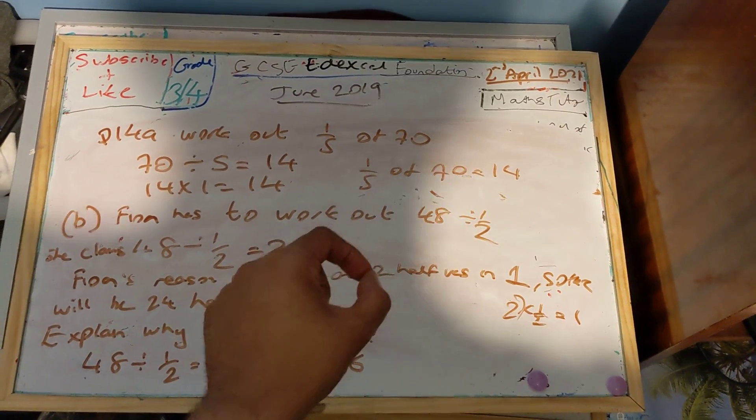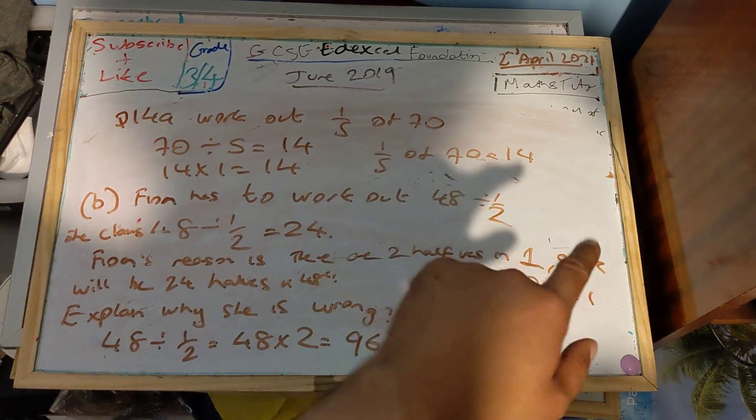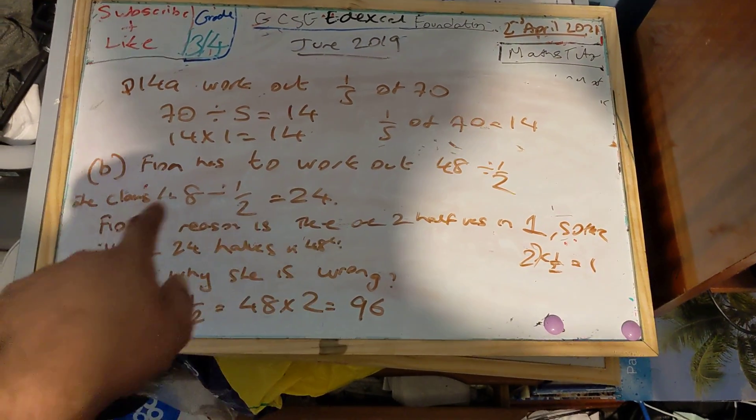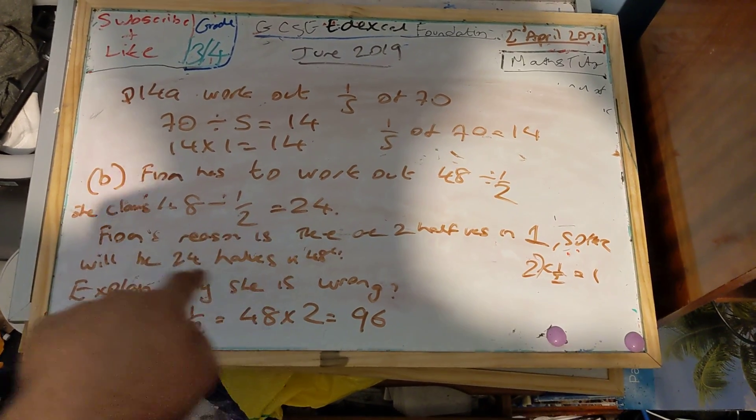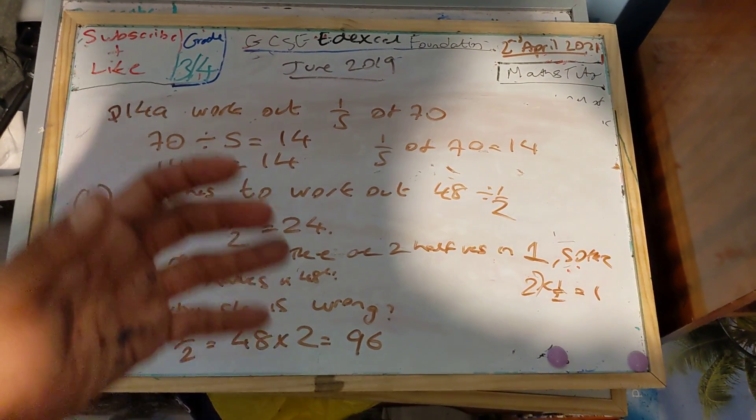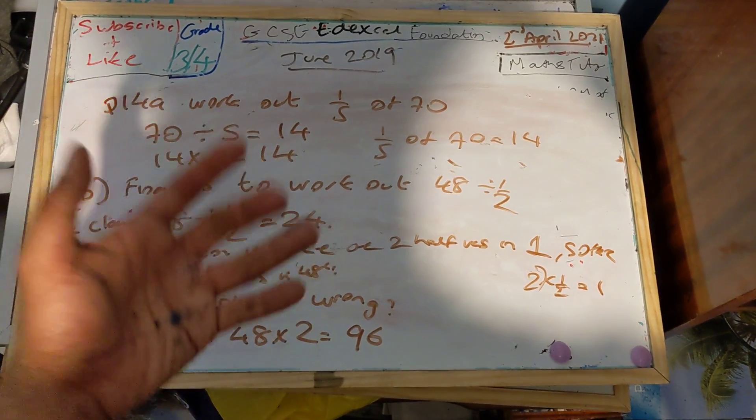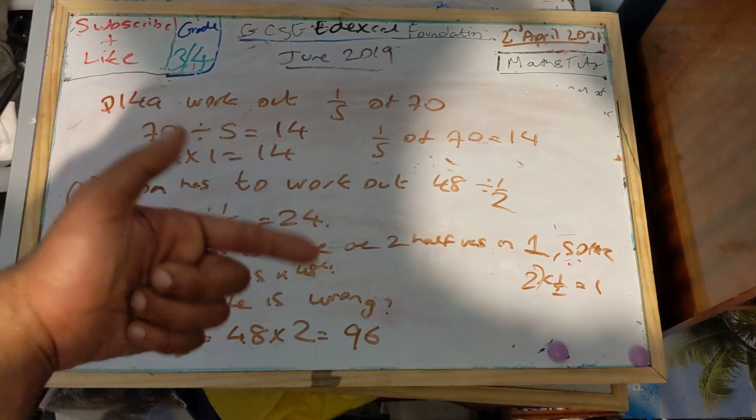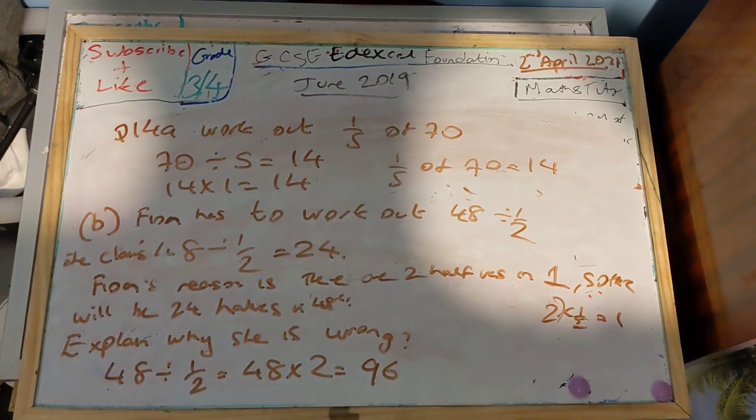Two halves in one is actually correct. But when she says that there are 24 halves in 48, actually 24 halves is 12. So that can't actually be right. When I divide by half in maths, it's the same as multiplying by 2. Dividing by half is the same as multiplying by 2.